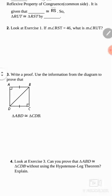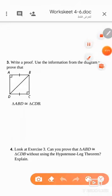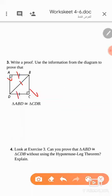Question number three: write a proof from the diagram. We have two right triangles. One leg is congruent to one leg, and the hypotenuse DB is a common side. These are the three conditions to use the HL theorem.